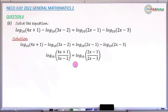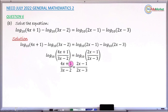So you can see you have log base 10 of one bracket equals log base 10 of another bracket. Since both logs have the same base 10, the arguments inside must be equal. Therefore, we equate: (4x + 1) divided by (3x - 2) equals (2x - 1) divided by (2x - 3). The logarithmic equation has now been reduced to a normal algebraic equation.